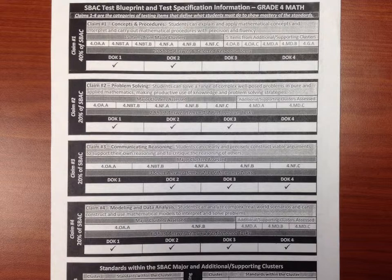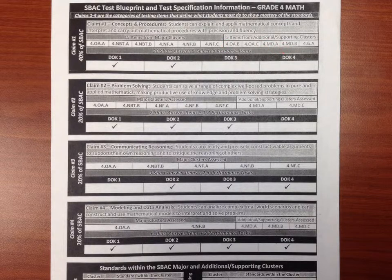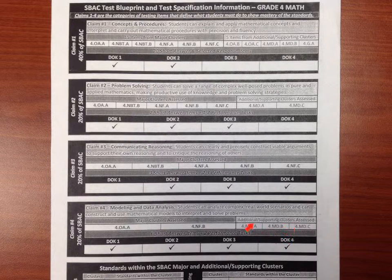What about the standards that are not featured as much? That's a good pattern to look at as well. Look at measurement and data — there are five items here as a minor cluster, then again as an additional cluster, and again in the additional supporting cluster. So it does appear, but it's a secondary cluster. It's going to be supplementary to what other things are being asked.